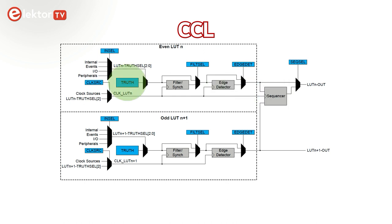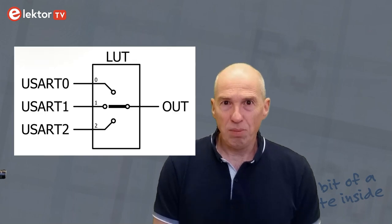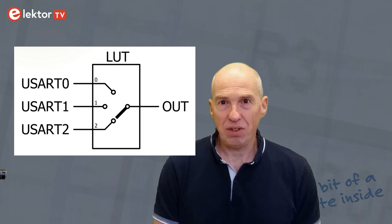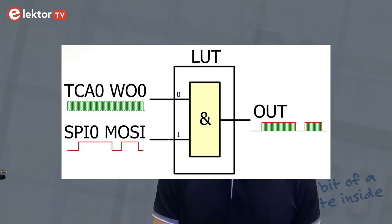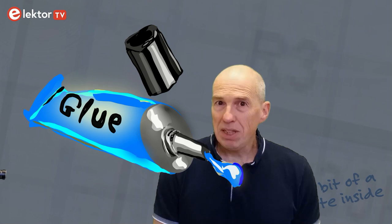Each LUT can implement any boolean function of 3 variables. The inputs for the LUTs can be physical pins, but also signals inside the chip, like the output of the analog comparator, or a timer, or the TX signal of a UART, the output of another LUT, or even its own output. It is not possible to connect everything you like, but with a bit of cleverness a lot can be done. With the CCL it is for instance possible to multiplex the TX outputs of UART 0, 1 and 2, or create a burst signal for an infrared remote control by combining a timer with the SPI output. The CCL can also be simple glue logic, allowing you to simplify a circuit.